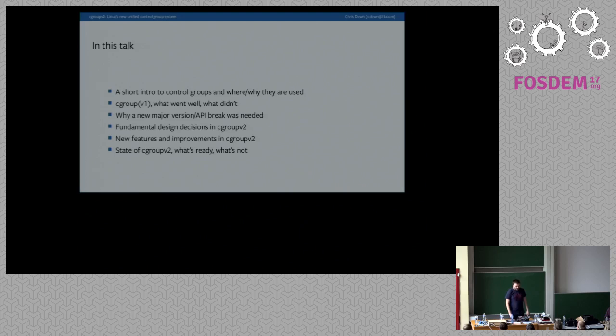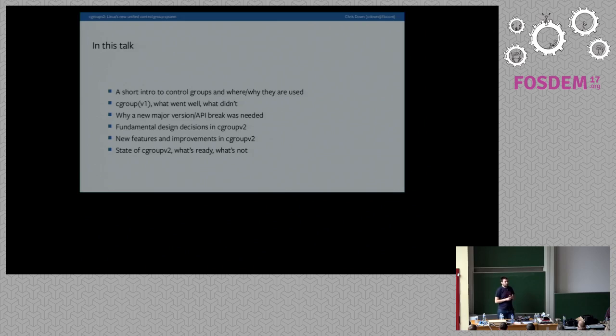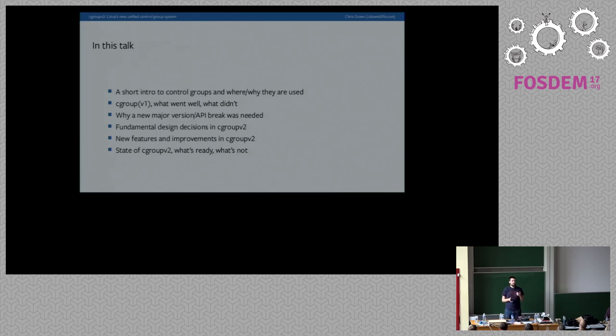I'm going to give an introduction to control groups — what they are and where you may have encountered them. If you already know something called control groups, you've almost certainly been interacting with version one. Control groups have existed in the kernel since around 2008. It's been one of the building blocks of containers as we know them. It's got good things in it, but also a whole bunch of problems, usability foibles, and other issues which are not so great. I want to go into what those are and how we've tried to improve that in Cgroupv2.